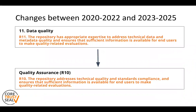Regarding the changes between 2020–2022 and 2023–2025: a very obvious one is the change of the name from 'data quality' to 'quality assurance,' which allows for a broader scope covering not just the data but all digital objects involved. Repository quality assurance is often related to standards compliance, and this requirement is intended to demonstrate that the repository provides data and metadata of sufficient technical quality to allow users to make assessments about their scientific quality. References to expertise were removed here to avoid overlap with the expertise and guidance requirement, number six.